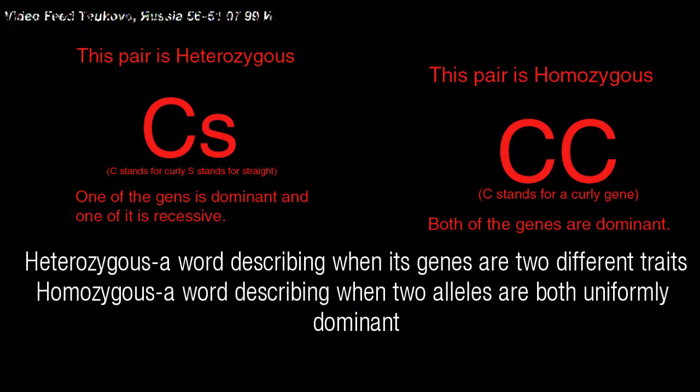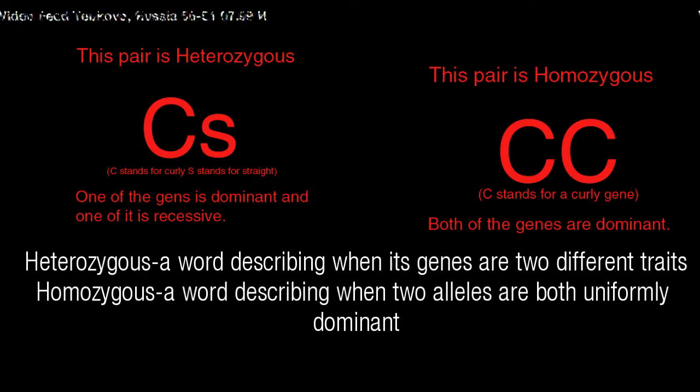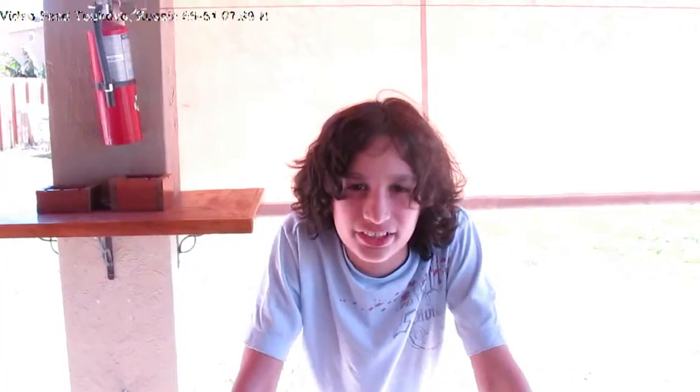Homozygous means a word describing when two alleles are both uniformly dominant. And heterozygous means when its genes are two different traits. You can see the pairs above to show which one's which. What kind of hair do you have if you copy both of each? Wavy. Let's pretend curly is capital C, capital C, and straight is capital S, capital S. You get capital C, capital S — which is wavy.